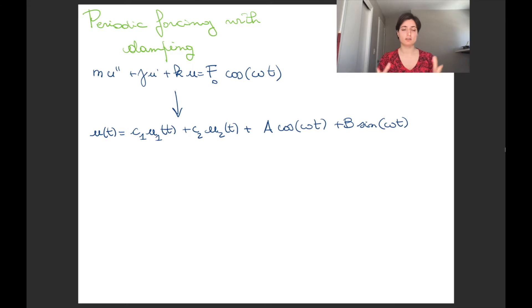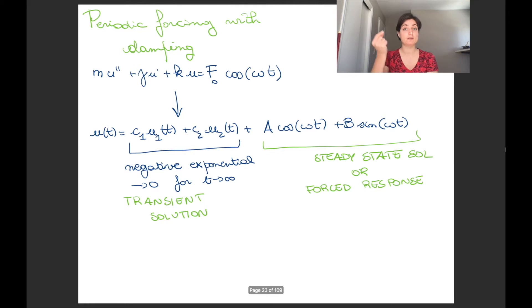And in general, the solution for this non-homogeneous ODE has the shape that we expect: a block that depends on the homogeneous solution, so c1u1 + c2u2, and a block that depends on the forcing term, so sine and cosine of omega t, with the frequency of the forcing term.